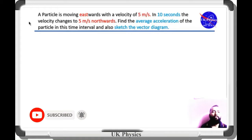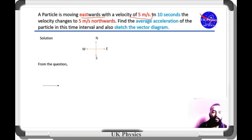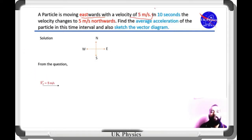Here is a question. A particle is moving eastwards with a velocity of 5 meter per second. This can be represented by a vector diagram. The magnitude is 5 meter per second and the direction is eastwards. The length represents the magnitude, and the arrowhead represents the eastward direction.